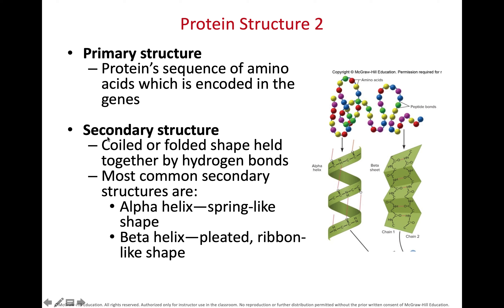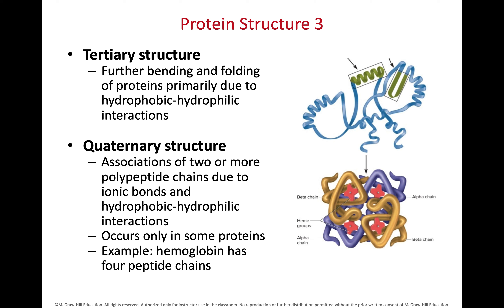As those amino acids interact with each other, they can form spirals or zigzag back and forth — these are called the secondary structure. Spirals or helices are called the alpha helix, and the zigzags are called beta-pleated sheets. Taking multiple spirals and zigzags and folding them back and forth on each other gives us the tertiary structure.